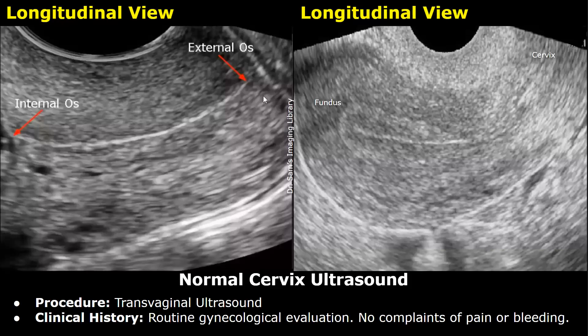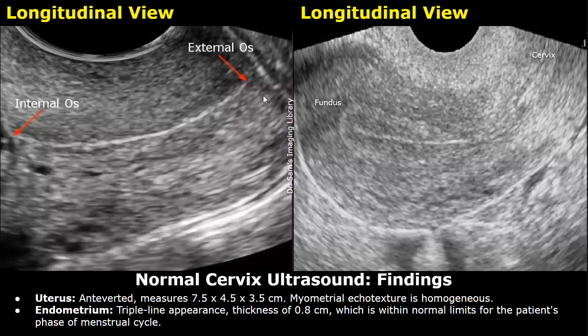The reports will include the findings and the impression. The first example is of a normal cervix. The report starts with the procedure and clinical history. The procedure in this example is transvaginal ultrasound; clinical indication is routine gynecological evaluation with no complaints of pain or bleeding.